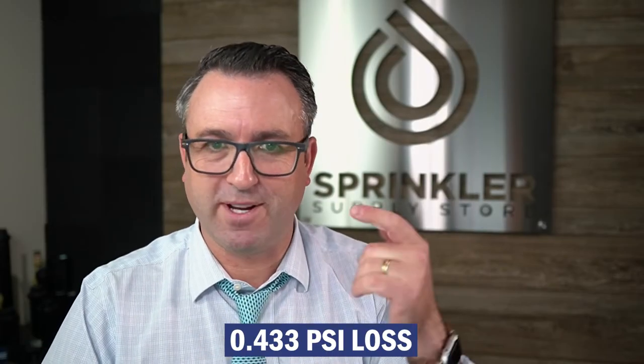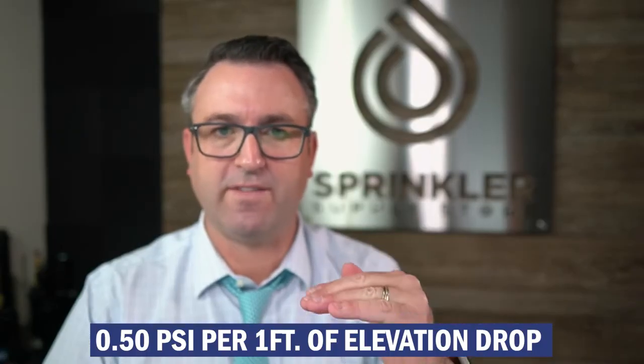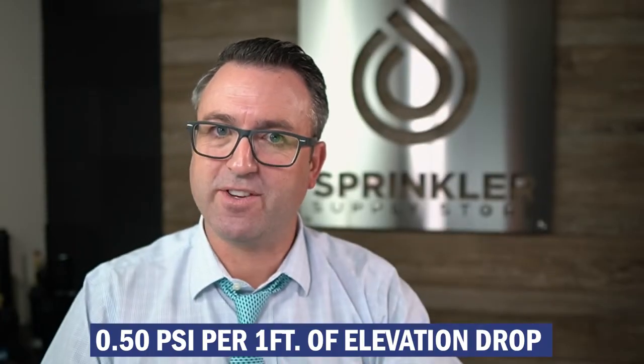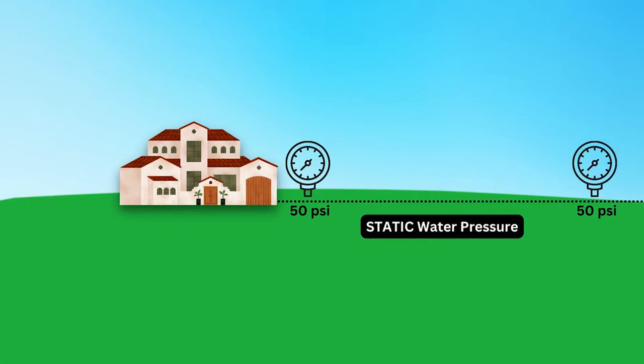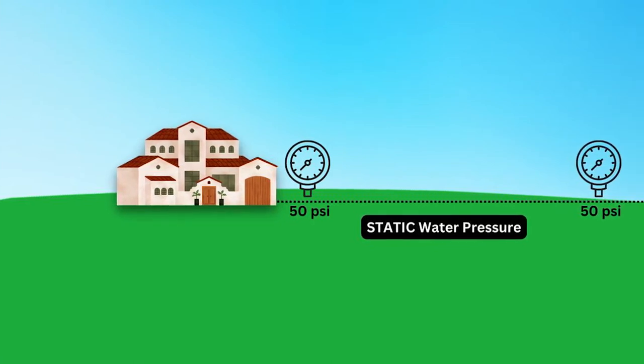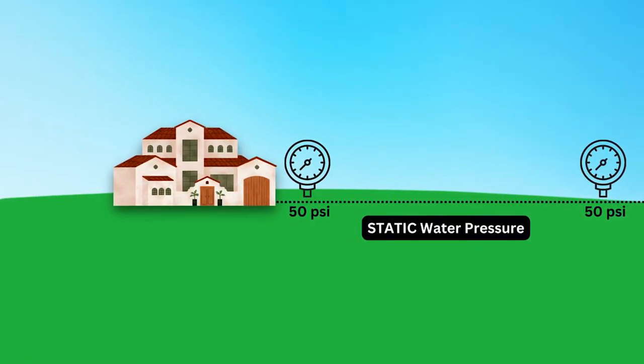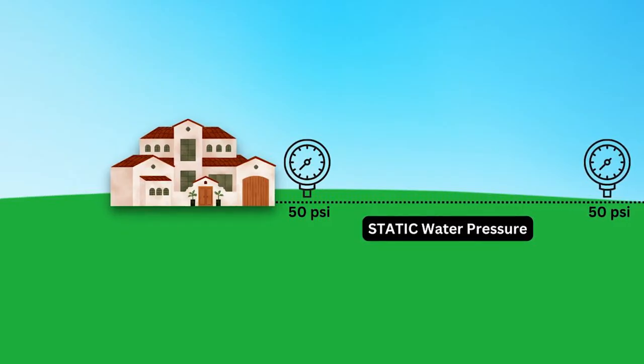Gravity accounts for losing or gaining about a half a pound of pressure per foot of elevation — it's actually 0.433 PSI per foot, but easy to remember as one half PSI for every foot of elevation. So if you're going down, you are gaining pressure, and if you go up, you are losing pressure. Static water pressure is the same at all points on the irrigation system.